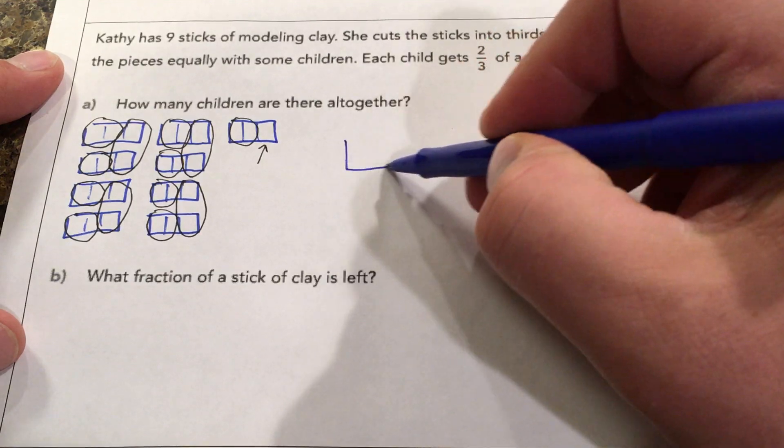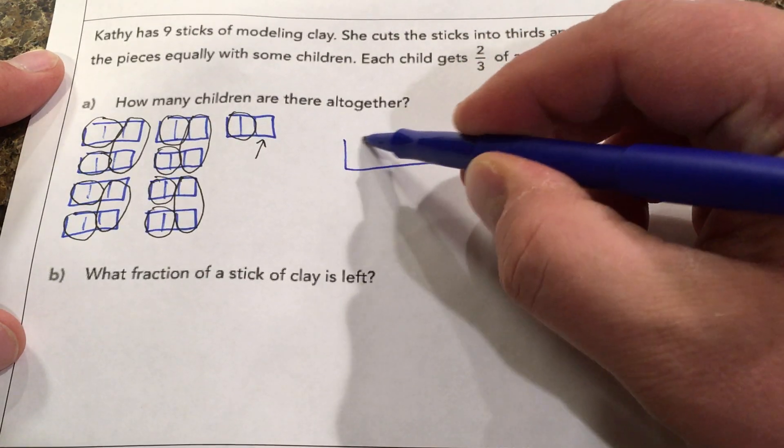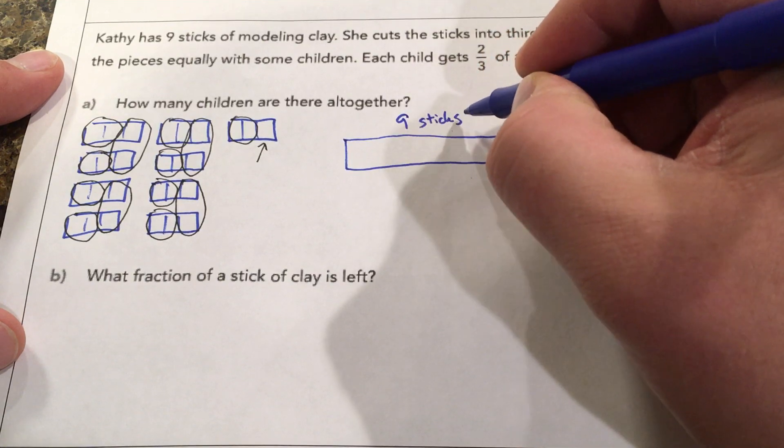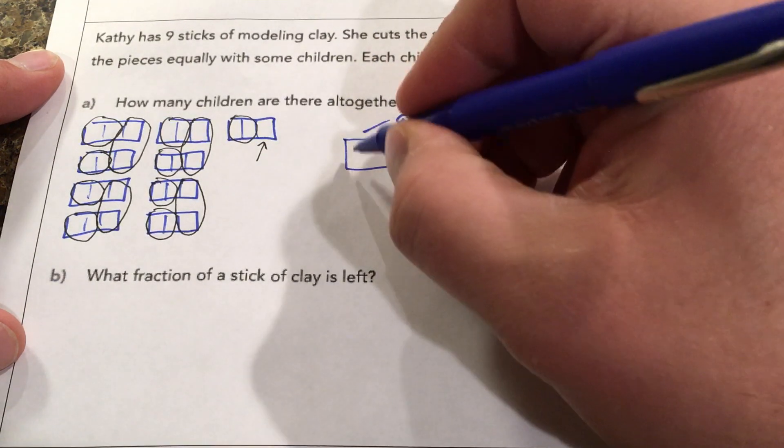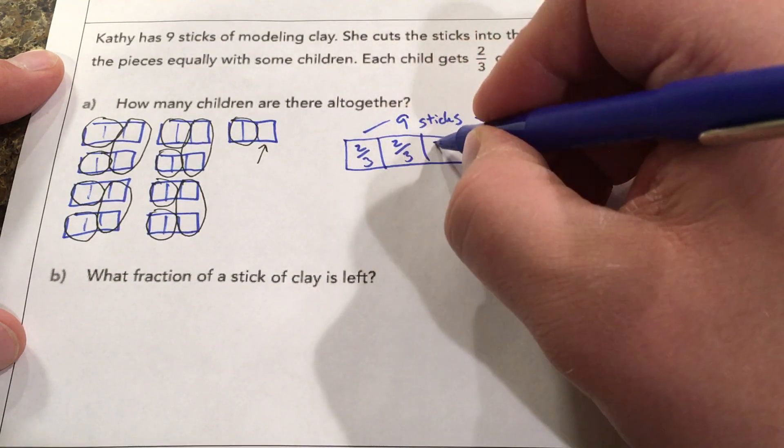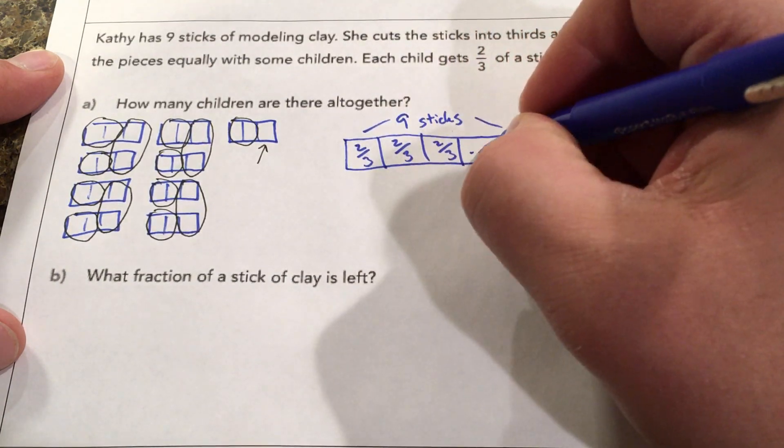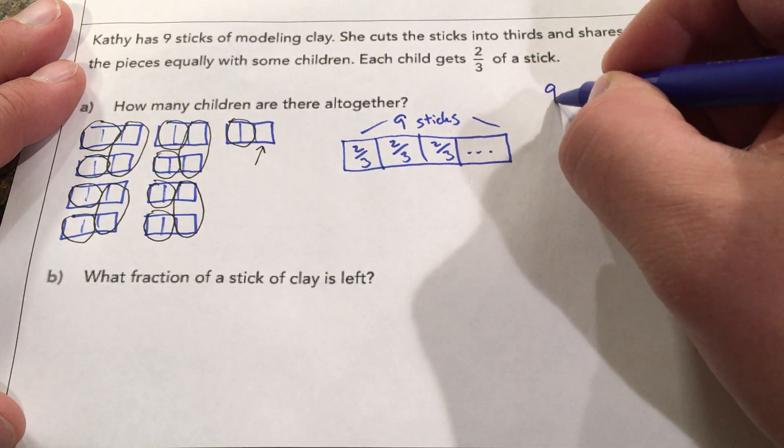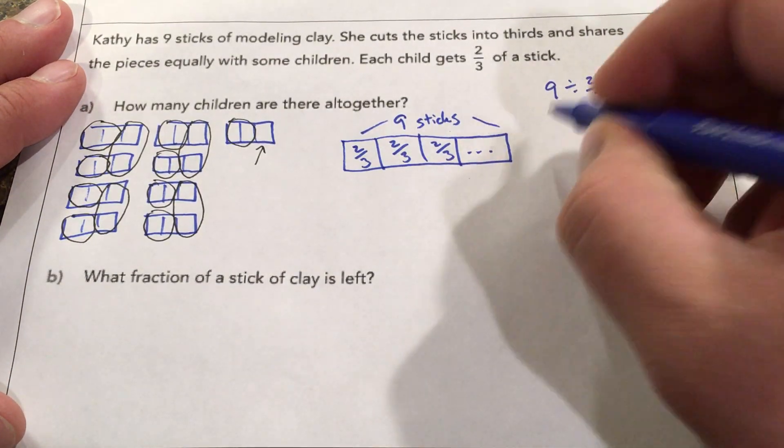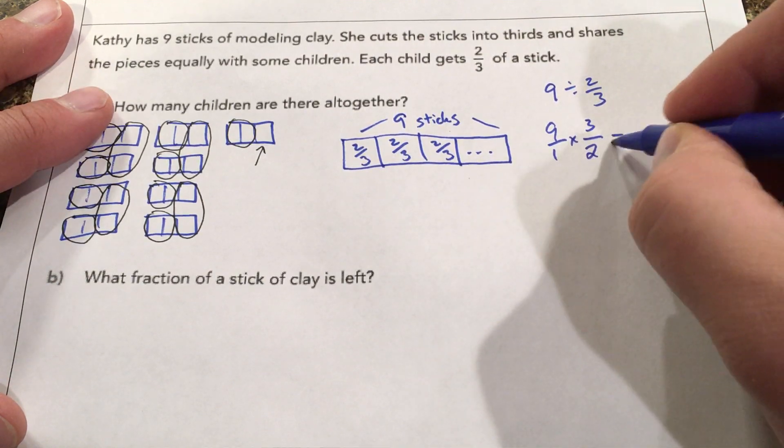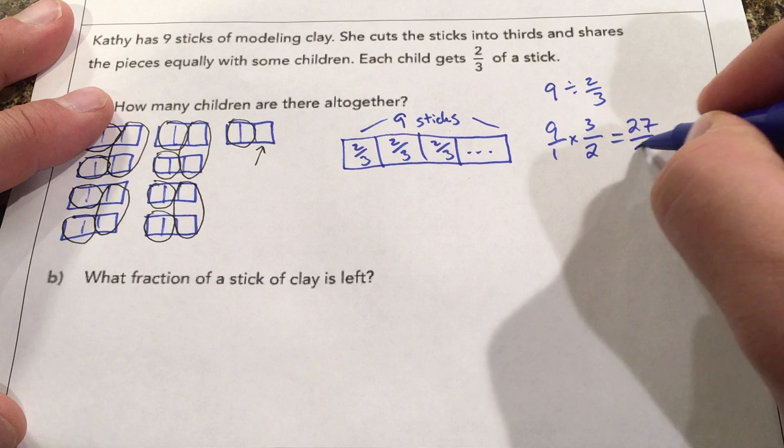Another way we could have looked at this is we could have just started with the nine sticks in one bar and we're splitting it into two-thirds. And we want to see how many two-thirds fit into nine. So nine divided by two-thirds or nine over one times the reciprocal three over two which is 27 over two.